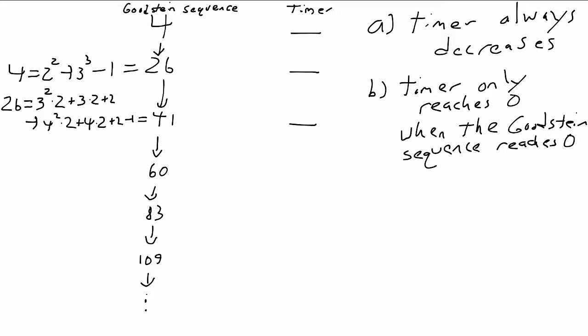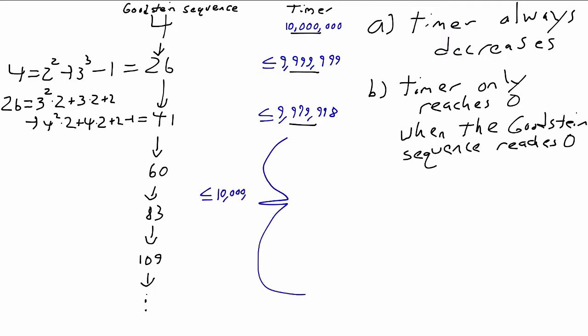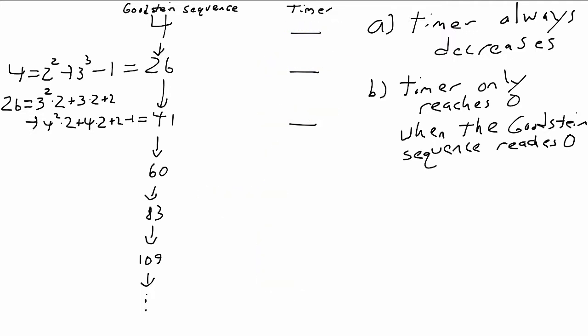Consider the first interesting Goodstein sequence, the one starting with 4. We want to assign values to this timer starting at the very first step. If we assigned a natural number — say 10,000,000 — the value of the timer at the next step would have to be at most 9,999,999, and we'd have to stop within at most 10,000,000 steps. But we don't know how many steps it's going to take, so we can't assign any natural number.